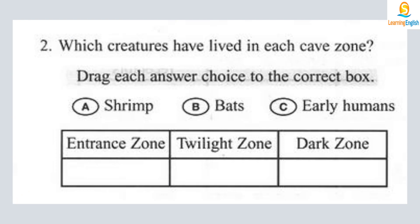Questions two through three. Listen to a biology professor talk about caves. The interior of a cave is divided into three zones. The entrance zone may serve as a place of shelter for animals or people. Prehistoric humans used entrance zones of caves as shelters and burial grounds. Therefore, such zones are of interest to archaeologists, as they provide clues to the habitat of early human beings.